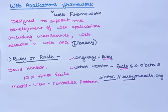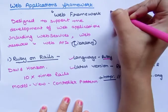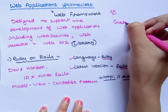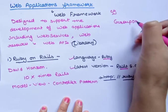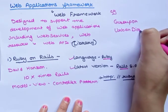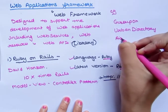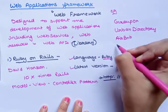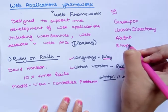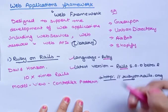You can get this framework from http://rubyonrails.org. Websites using Ruby on Rails include Groupon, Urban Dictionary, Airbnb, and Shopify. All these are very famous websites and they all use Ruby on Rails.